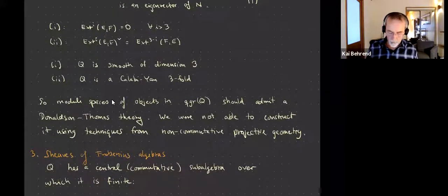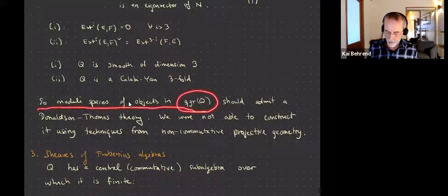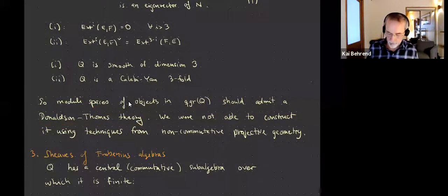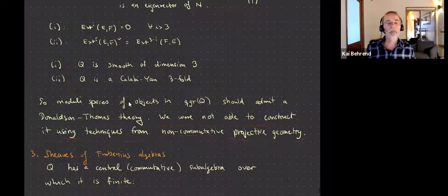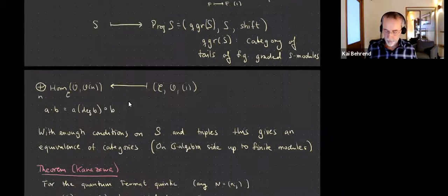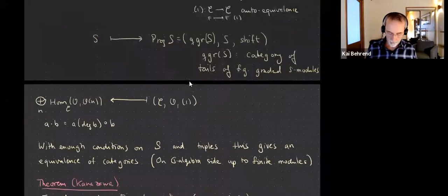Because of this Calabi-Yau three structure, you expect that moduli spaces of objects in this category should admit a Donaldson-Thomas theory. We were not able to construct it using techniques from noncommutative projective geometry — going through the Artin-Zhang literature didn't get us very far. So instead, let's talk about sheaves of Frobenius algebras.